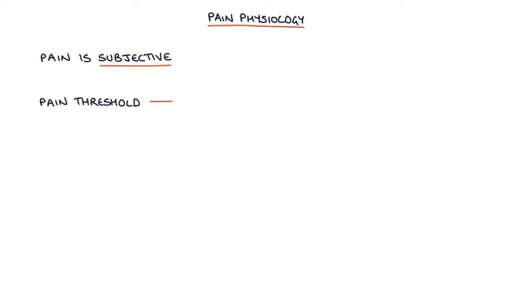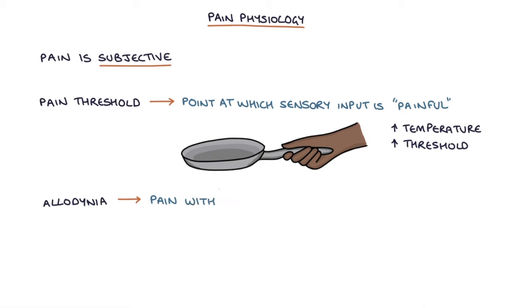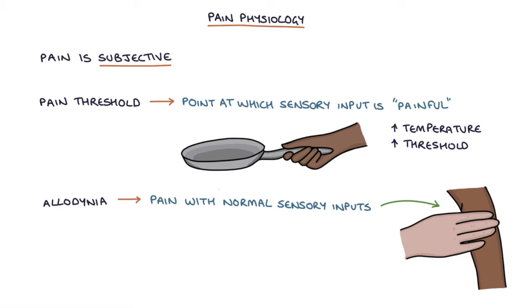Pain threshold refers to the point at which a sensory input is reported as painful. For example, different temperatures can be applied to the skin to measure the point at which heat is interpreted as pain. If someone experiences pain at a higher temperature, this indicates a higher pain threshold. Allodynia refers to when pain is experienced with sensory inputs that do not normally cause pain, for example light touch of the skin, indicating a low pain threshold.